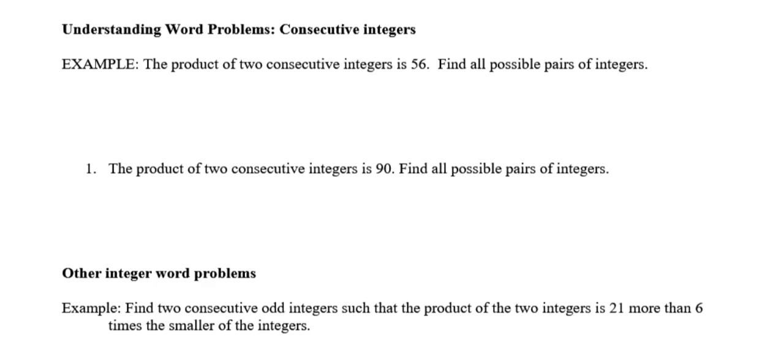Let's begin with the first type of problem. The product of two consecutive integers is 56, find all possible pairs of integers. The first thing is understanding what it's asking you. The word product means multiplication, and consecutive integers are positive and negative whole numbers that are in order, right?